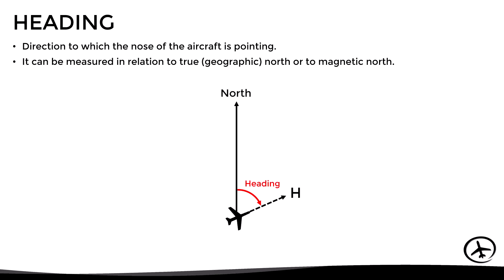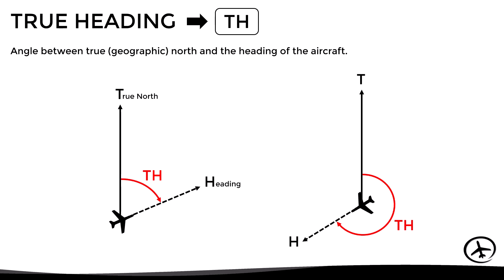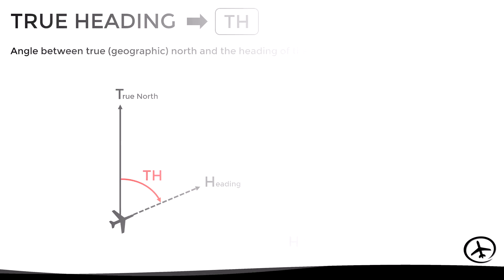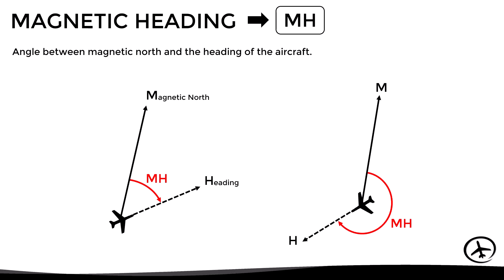The heading is the direction to which the nose of the aircraft is pointing. If this heading is measured in relation to true or geographic north, it is called true heading, abbreviated as TH, defined as the angle between true north and the heading of the aircraft. If measured in relation to magnetic north, it is called magnetic heading, abbreviated as MH, defined as the angle between magnetic north and the heading.